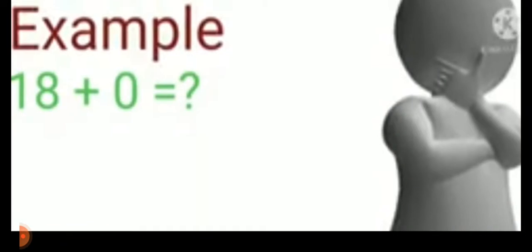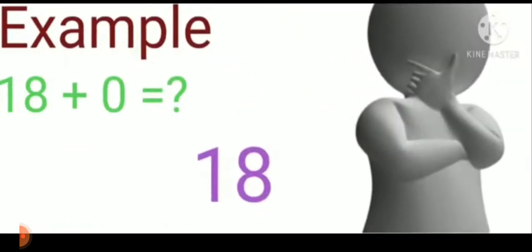Example is 18 plus 0. Let's suppose John is having 18 toffees and he has not eaten any toffee out of them. So how many toffees are left with him? 18. Yes, you are correct. Because when we are adding 0 to any number, the answer or the sum is the number itself.